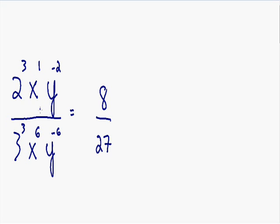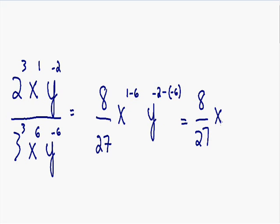If you remember from my previous video, when you have two exponents with a common base you can simplify them by subtracting the exponents. For the x term, since we're dividing, we subtract the exponents: 1 minus 6 equals negative 5. For the y term, we subtract the exponents: negative 2 minus negative 6 — the two negatives become a positive — so negative 2 plus 6 equals positive 4. So we now have 8 over 27, times x to the negative 5, times y to the 4th.